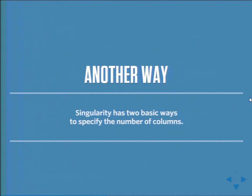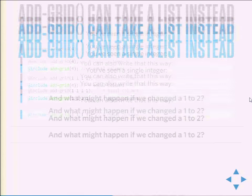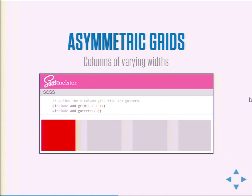There's another way to specify grids with Singularity: using a list. Instead of `add-grid 4`, you could type `1 1 1 1` and get your four-column grid. But what happens if you change those digits? That's how we get to asymmetric grids. Not all grid columns have to be the same width. By changing the numbers, you can have columns of different widths relative to each other. The left and rightmost columns might both be 1, with middle columns alternating between 2, 3, and 1. Singularity adds up all those numbers, divides them out, and each one becomes that fraction of the total width.